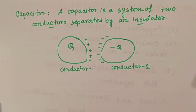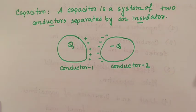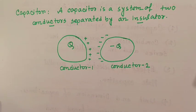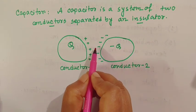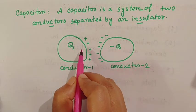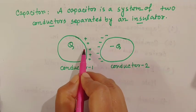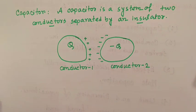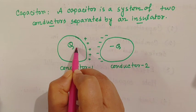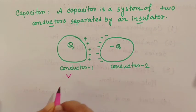Now, the next topic is capacitance. To understand capacitance, we have to know about other topics. The electric field in the region between the conductors is proportional to the charge Q. The potential difference V is work done per unit positive charge. Suppose within these two conductors the potential difference is V.